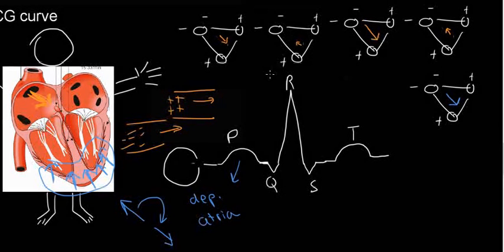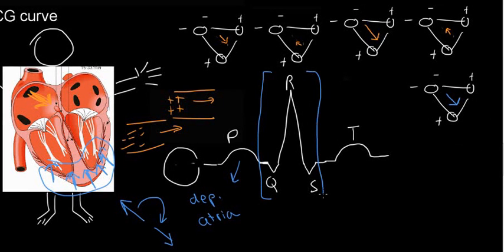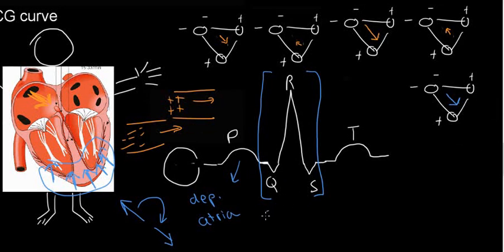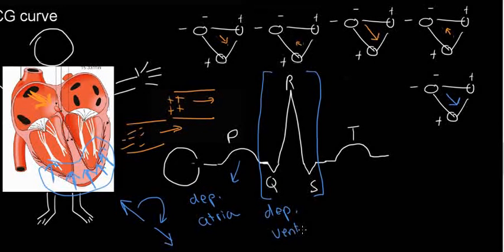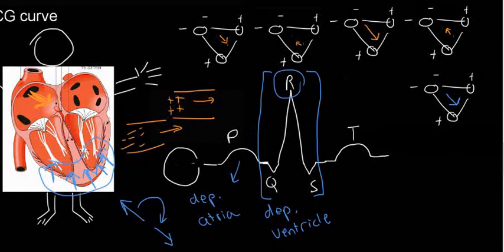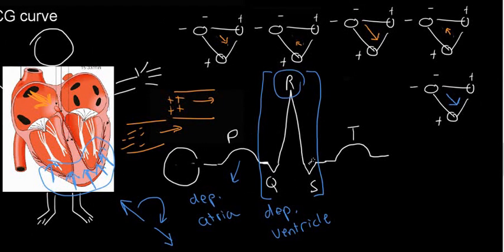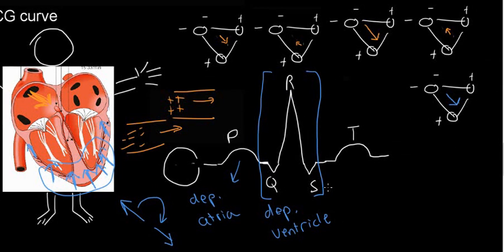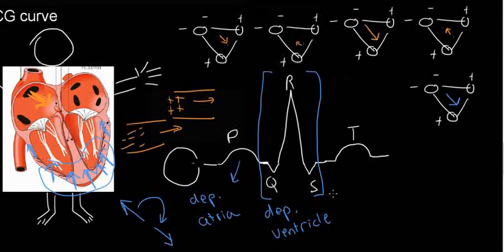The Q, R, and S is considered a complex — the QRS complex — because it is all basically the depolarization of the ventricles. The Q is the depolarization of the septal tissue in the ventricle. The R is the major depolarization event. And then we have the S as the outskirts or edges of this tissue. All of this is the depolarization of the ventricles.